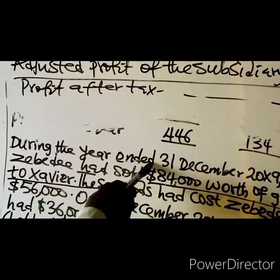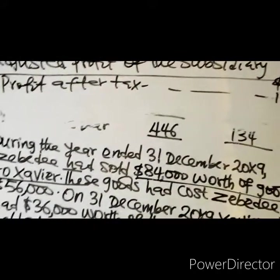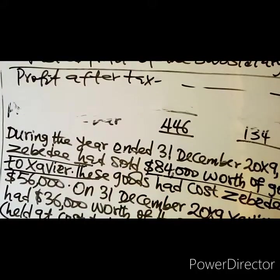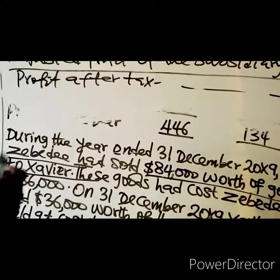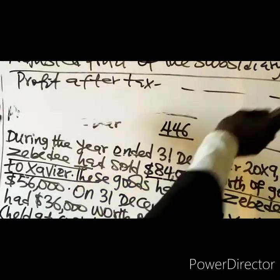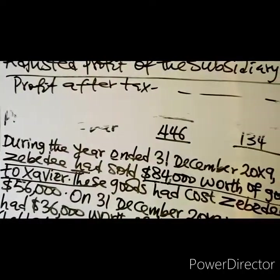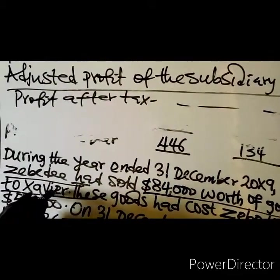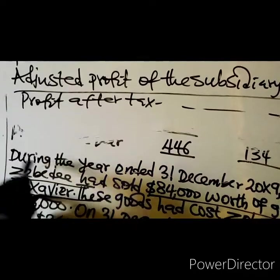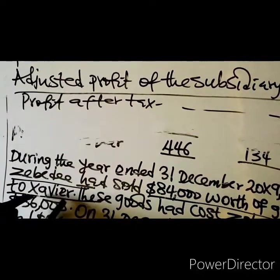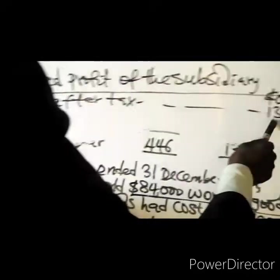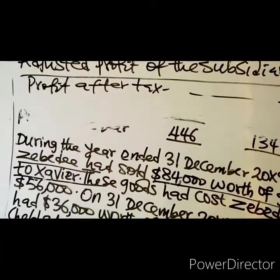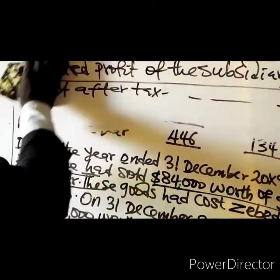ZBD had sold the goods — ZBD is the seller, which is the parent. Since the parent is the seller, we do not need to adjust for unrealized profit in the subsidiary's profits. If Zavia had been the seller, we would deduct the unrealized profit. Since the parent is the seller, no adjustment is needed.